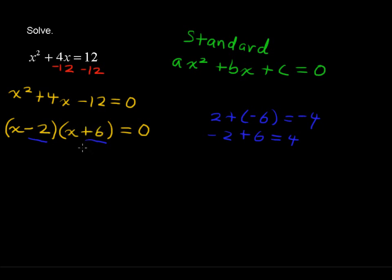Now that we have these factors, we can set each of them equal to 0. Because either x minus 2 or x plus 6 or both of them equal 0 to get this product. That's the only way you can multiply something to get 0 is if one of the factors equals 0. So we're going to have two mini equations: x minus 2 equals 0 or x plus 6 equals 0.